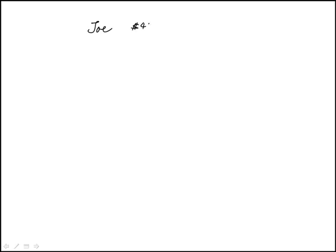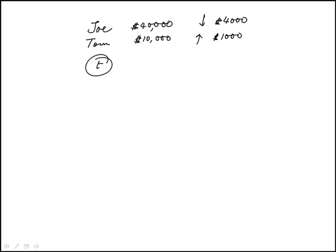We're told that Joe invests $40,000 and Tom invests $10,000. The value of Joe's investment decreases by $4,000 every year, while the value of Tom's investment increases by $1,000 per year. The question asks which system of equations could be used to find the number of years T it will take for the values V of the two investments to be equal.